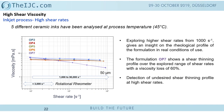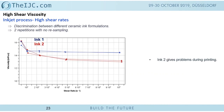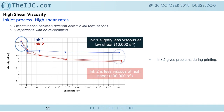Another inkjet ink example: one formulation showed issues during printing — formulation 2 — which turned out to be the least viscous at higher shear rates, even though viscosity measurements at lower shear rates showed all formulations to be quite similar. And when I say low shear rate here, I mean starting from 10,000 reciprocal seconds — not 1,000 or 100. This again underlines the importance of going higher in shear rate.